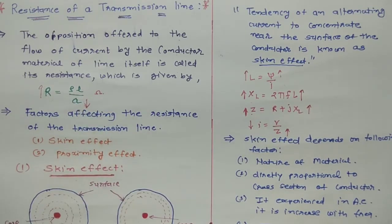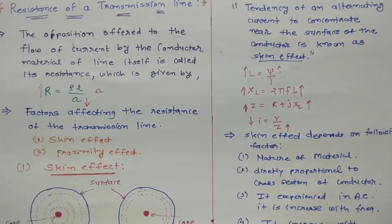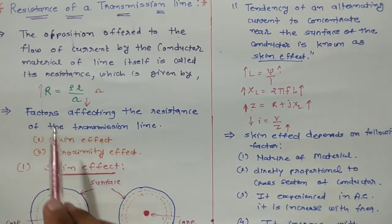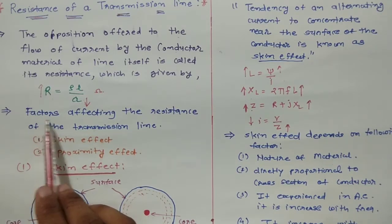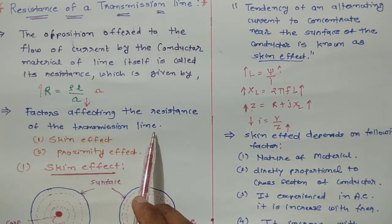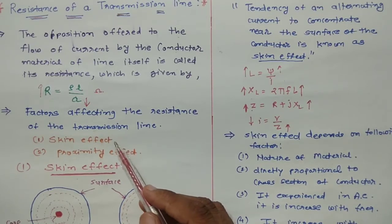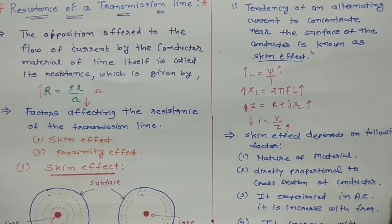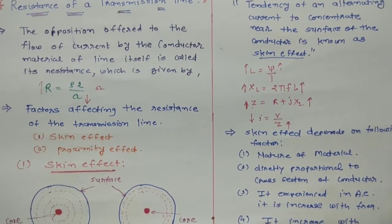Resistance also depends on temperature. In transmission line, generally the power loss happens due to this resistance. Now I will discuss about the factors affecting the resistance of transmission line. There are two factors: skin effect and proximity effect.